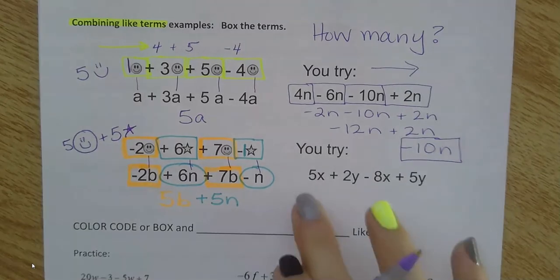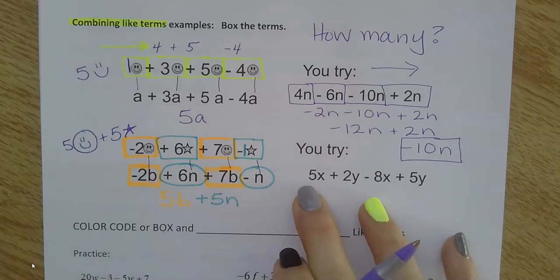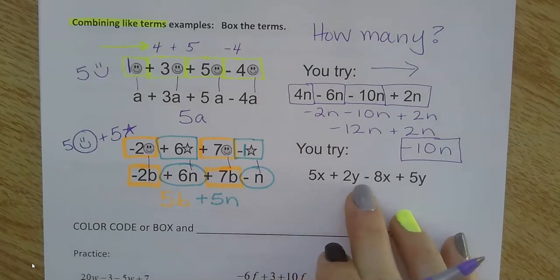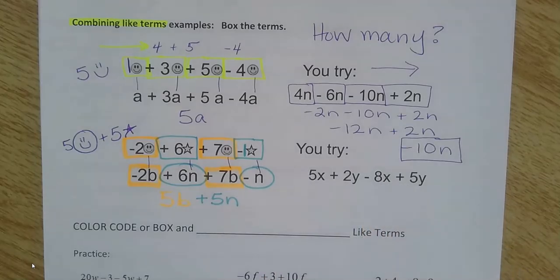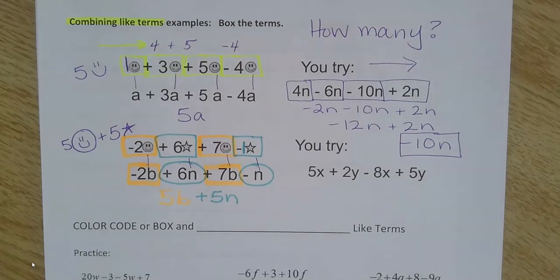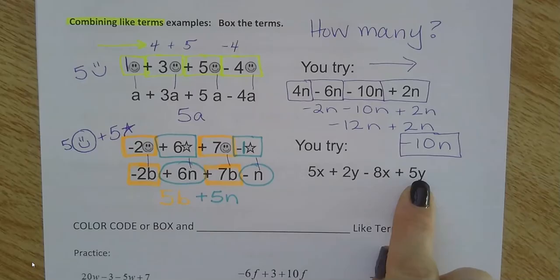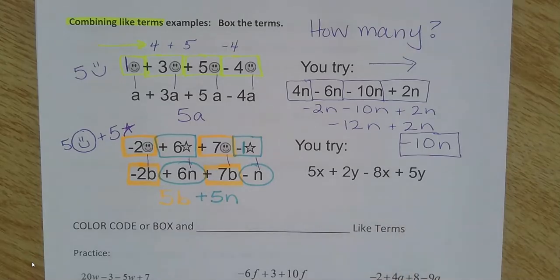So you try this one. I have 5x plus 2y minus 8x plus 5y. Let's color code and then combine those like terms. Actually color code this one. Pause the video and come back when you've combined those like terms together. How many x's do you have? How many y's do you have?